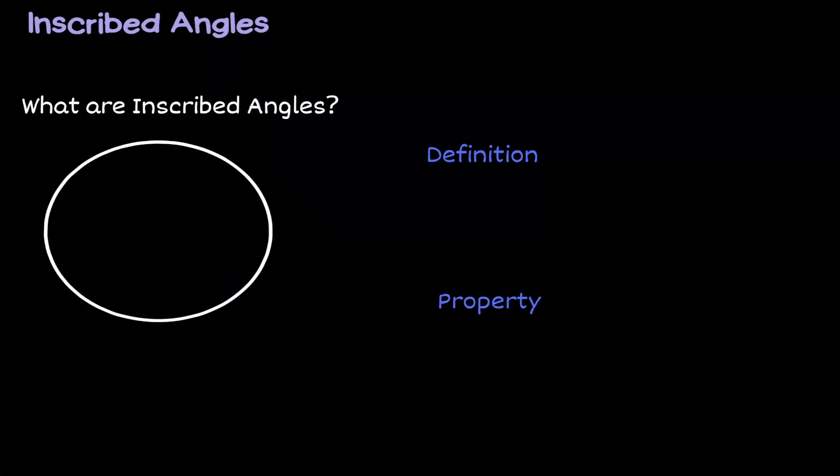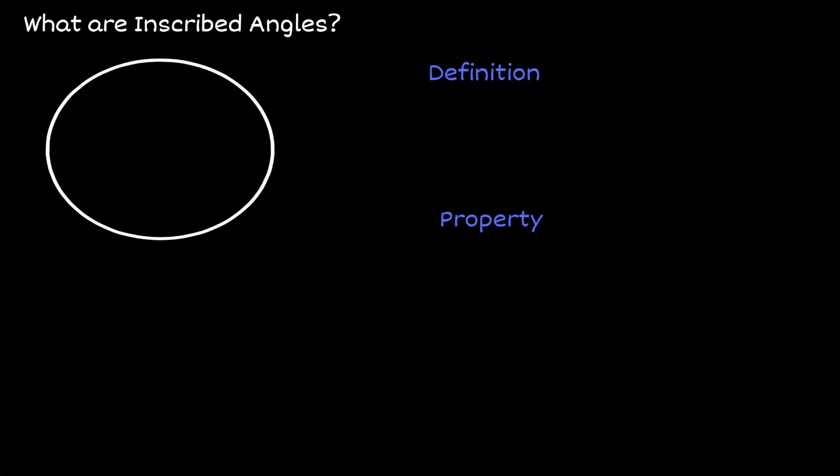Welcome. Let's discuss inscribed angles in a circle. To illustrate inscribed angles, let's consider two chords that intersect at one point in the circumference of the circle.